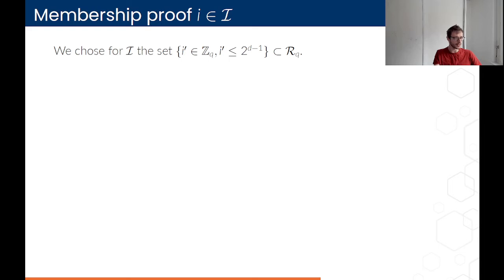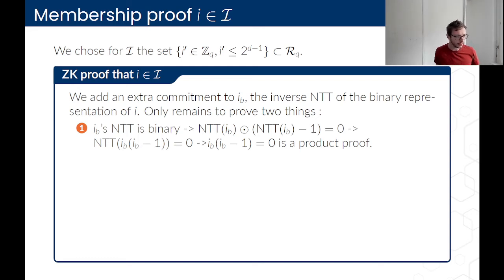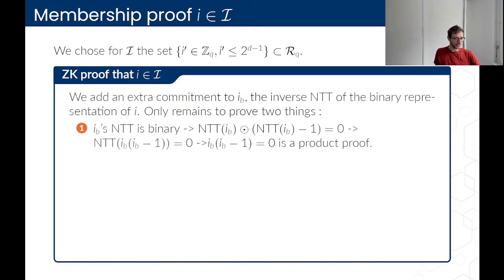Now item 3. We have a different set of identities calligraphic I: the integers in our queue from 0 to 2^d minus 1. I'll explain the zero-knowledge proof that I is in calligraphic I. It goes in two steps. First, we add an extra commitment to IB, which is the inverse NTT of the binary representation of I. Then two things remain to prove: we prove that IB's NTT is binary, because it is the inverse NTT of some binary representation. This is done using the product proof.